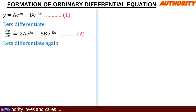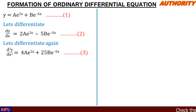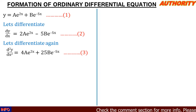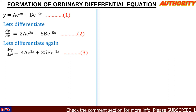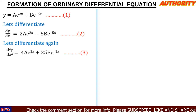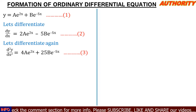Let's differentiate for the second time. Differentiating again, we are going to have d²y/dx² = 4ae^(2x) + 25be^(-5x). Let's call this equation three.